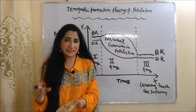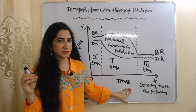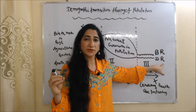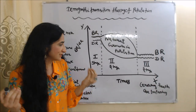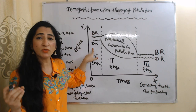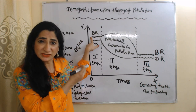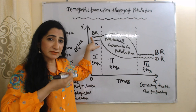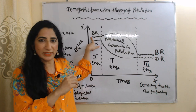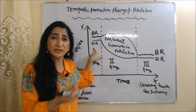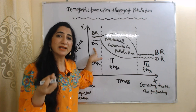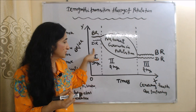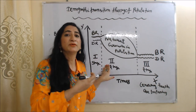We will understand this theory with the help of a diagram. On the x-axis we have time and on the y-axis we have birth rate and death rate. The BR curve shows birth rate and the DR curve shows death rate. This theory is divided into three stages. During the first stage, both birth rate and death rate are very high because economic development is very low. People are mainly dependent on agriculture and give more births because they need more people to work. Death rate is also high due to lack of food, nutrition, health care knowledge, and medical services.